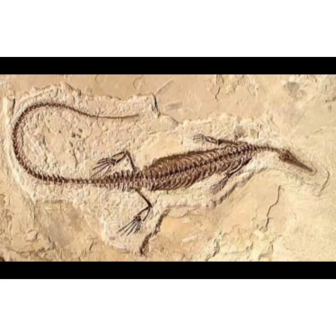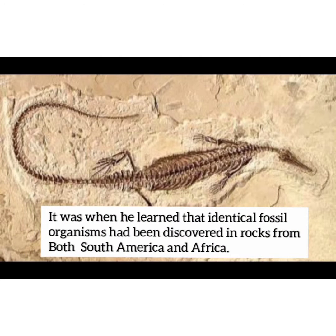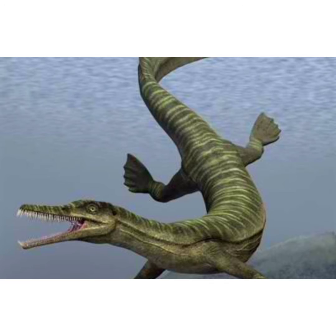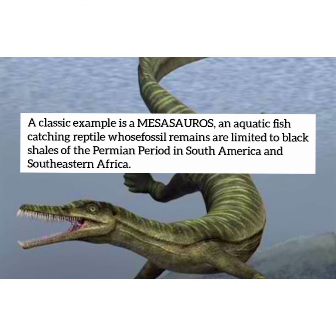Wegener's hypothesis gained support from a remarkable similarity at the continental margins. When he learned that identical fossil organisms had been discovered in rocks from both South America and Africa, it strengthened his case. A classic example is Mesosaurus, an aquatic fish-catching reptile whose fossil remains are limited to black shales of the Permian period in South America and southeastern Africa.